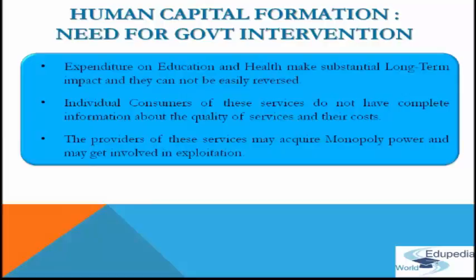So the role of government is important to ensure that the private providers of these services adhere to the standards and to ensure that options are available to all. For example, in the past very few people were aware about polio and its vaccination, but due to constant information provided by the government and various NGOs, people are now well aware of polio and India has already achieved 99% eradication, with only a few pockets of polio remaining. That is why government intervention is necessary.